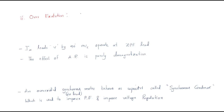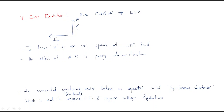Next case: over-excitation. Over-excitation means E·cos δ is greater than V. Since delta is zero, E is greater than V. In the phasor diagram, E is the larger vector, V is smaller, and the armature current Ia is positioned at 90 degrees relative to V and E.